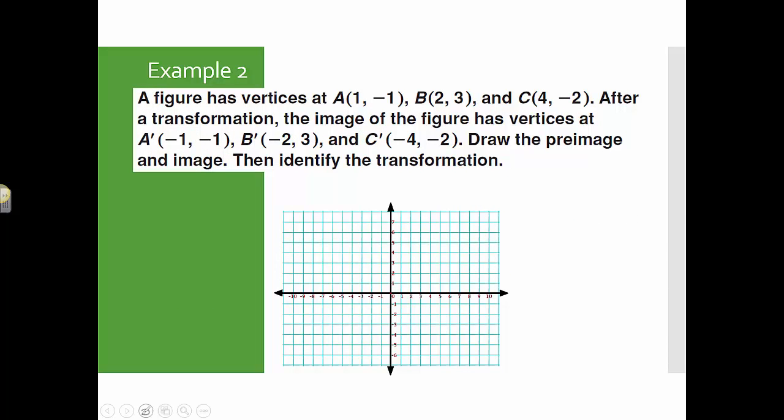For this one, we're going to plot the two figures and then determine what the transformation is. So my first figure I'm going to do in black. A is 1, negative 1. That's A. B is 2, 3. Here's B. And C is 4, negative 2. There's C. So we have a triangle.